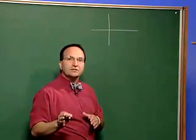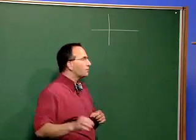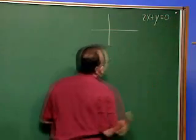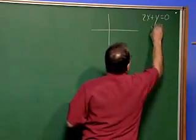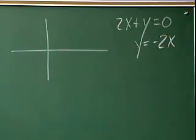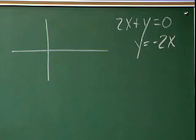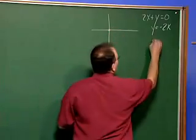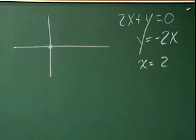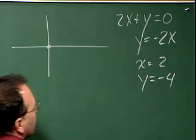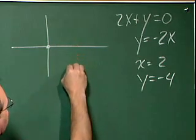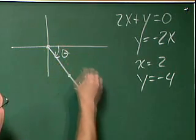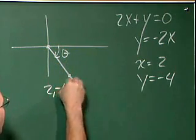We have the equation that 2x plus y equals zero. Well that also means that y is equal to negative 2x. And if I can choose any point, of course, other than zero zero, which would be at the origin, let me pick, for example, x equals 2. If x is equal to 2, that tells me y is equal to negative 4. So I would have the point on the terminal side of this angle theta as being 2 comma negative 4.